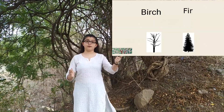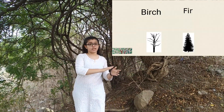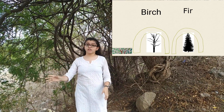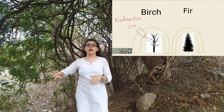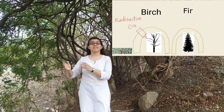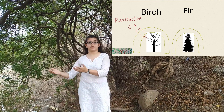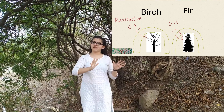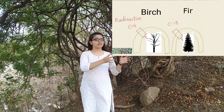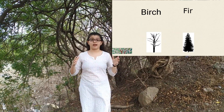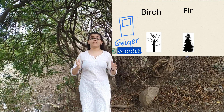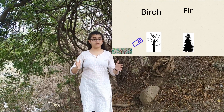She grew replicates of fir, birch, and cedar. She covered these in plastic bags. In the birch bags, she added carbon dioxide with the radioactive carbon-14 isotope. And in the fir bags, she added the stable carbon-13 isotope. After an hour, she used her Geiger counter, which detects radioactivity.